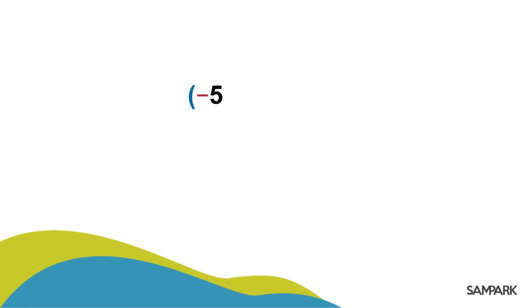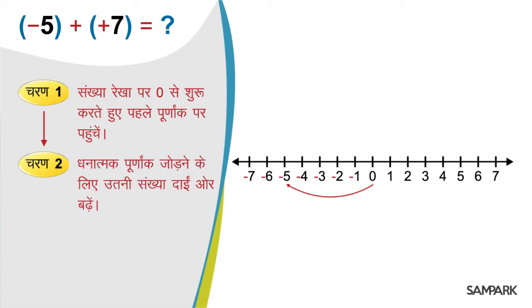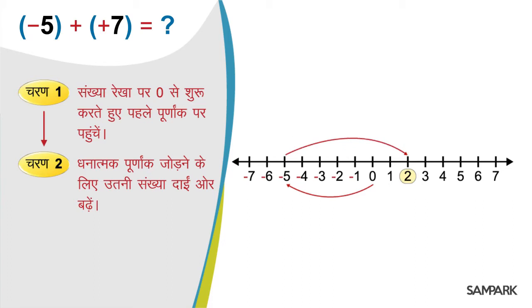Ab agla prashn hai minus 5 plus 7. To 0 se pehle Poonank yani minus 5 tak chalte hain. Yaad hai na baccho — Dhanatmak Poonank jodte hue utni sankhya daain or badhte hain. Ab hamein 7 jodna hai to minus 5 se 7 kadam daain or badhenge, aur hum aa gaye 2 par. Atah minus 5 plus 7 hua 2.